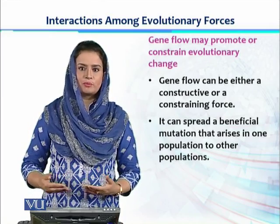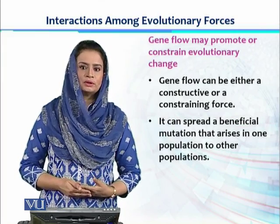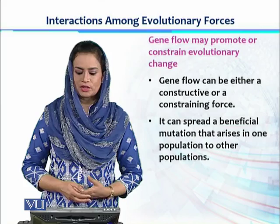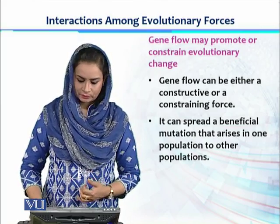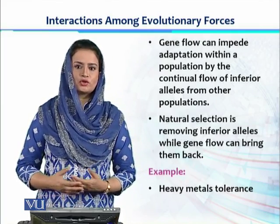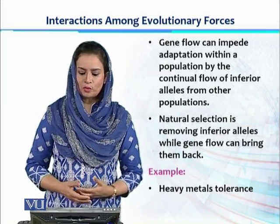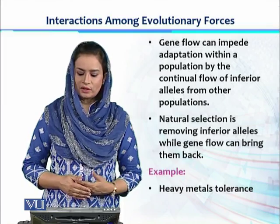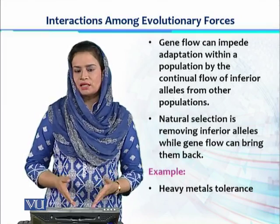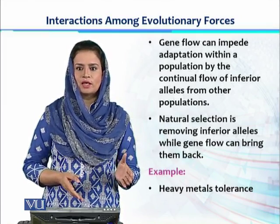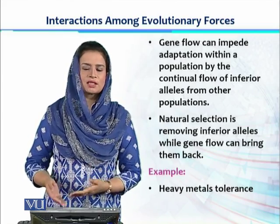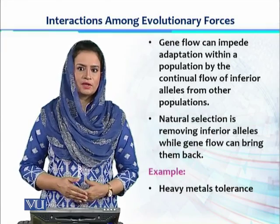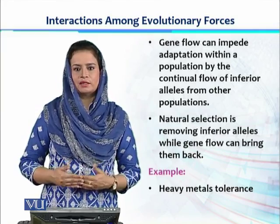There can be a spread of beneficial mutations that arise in one population to another population through gene flow. But it can also impede adaptations within that population through the continual flow of inferior alleles from other populations. At the same time, natural selection is continuously removing those inferior alleles while gene flow keeps bringing them in — so both processes are acting in opposition to each other.